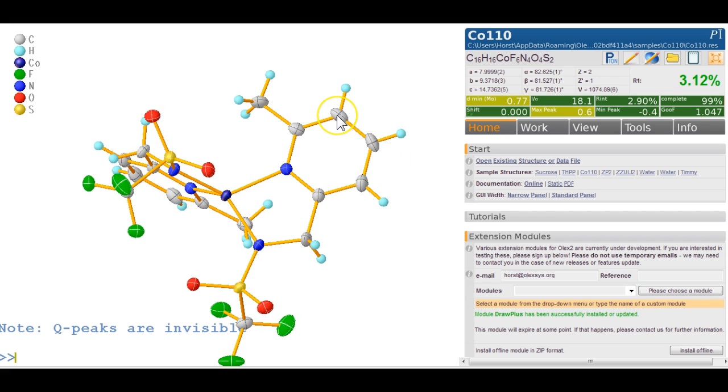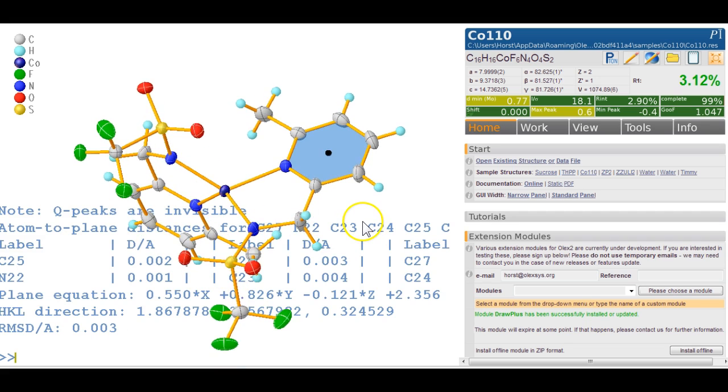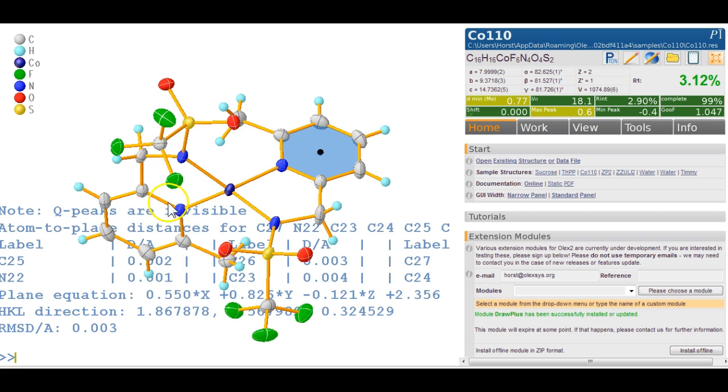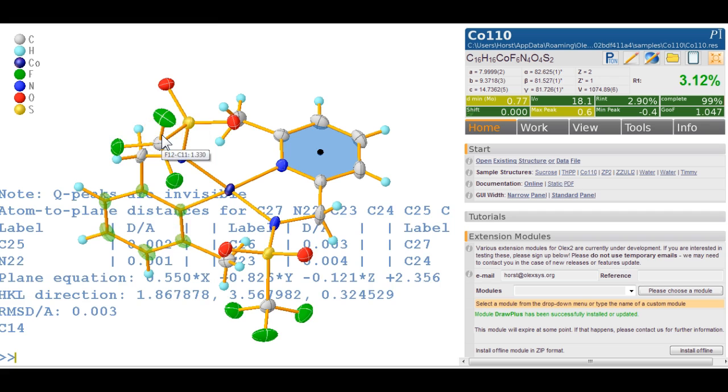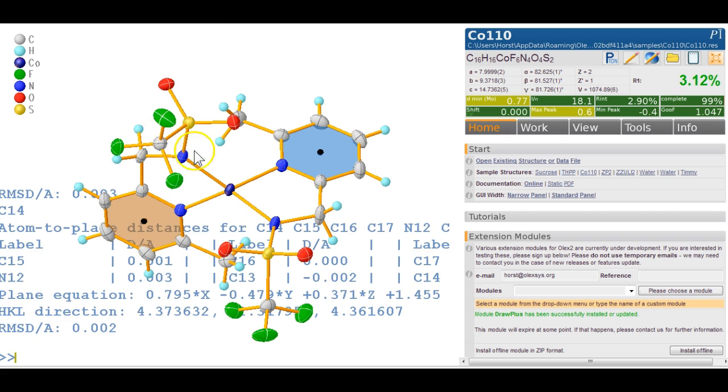So if you right click on this atom in the ring, you can go select rings and then you type MPLN that produces a plane here. And I can do the same here. I can right click on this, select the rings and up key to get the previous command back.